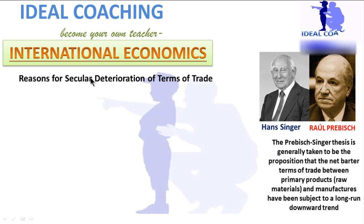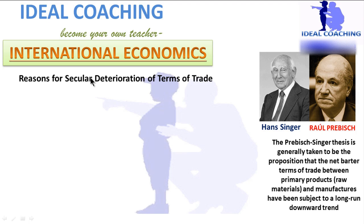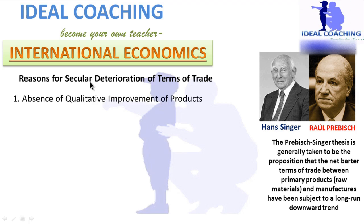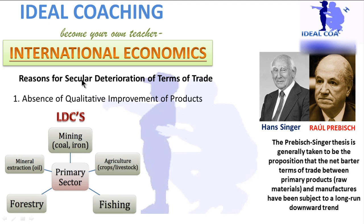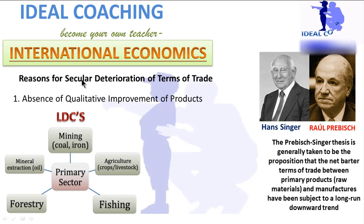The Prebisch-Singer thesis holds that the net barter terms of trade between primary goods and manufactured goods have been subject to a long-run downward trend. The first reason for this secular deterioration is the absence of qualitative improvement in LDC products. Primary products like fish, wood, and minerals are essentially the same as they were 50 years ago — there is no qualitative advancement, so their prices cannot be raised the way manufactured goods can.